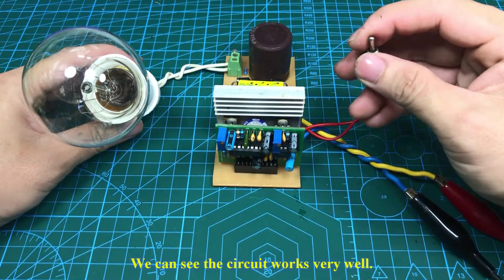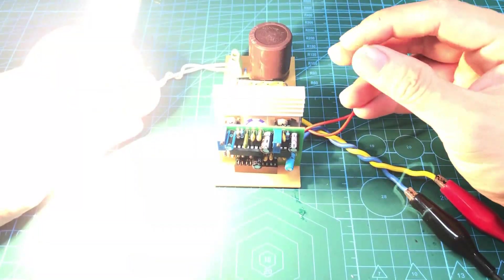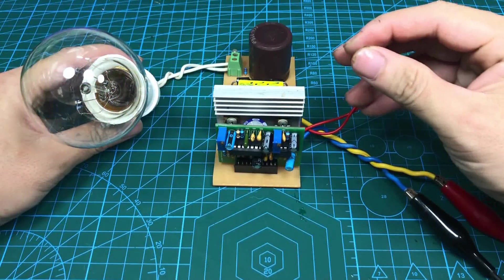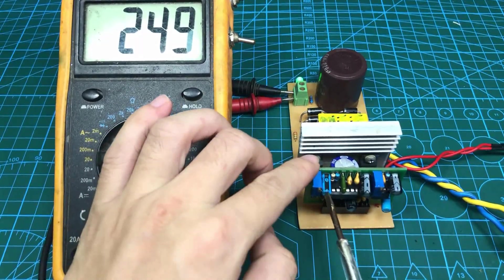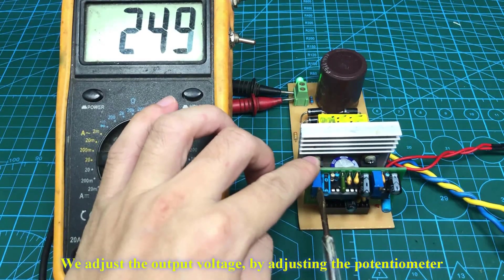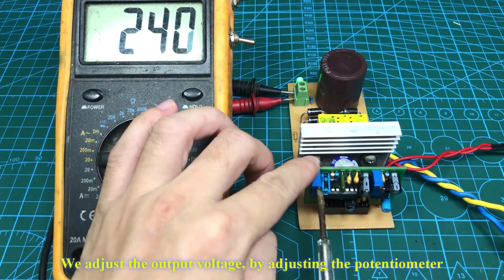We can see the circuit works very well. We adjust the output voltage by adjusting the potentiometer.